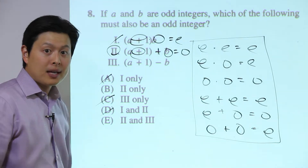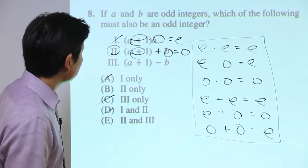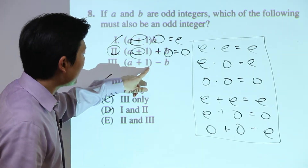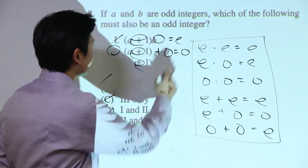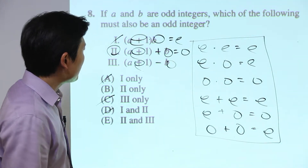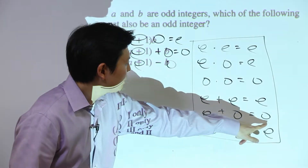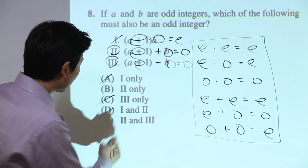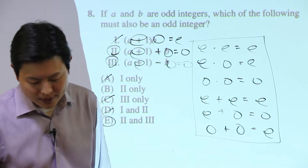Now we're between B and E, so let's check Roman numeral III: (a + 1) − b. A plus 1 is odd plus odd, which is even. Then even minus b — b is odd — and even minus odd works the same as even plus odd, which gives odd. Roman numeral III also works, so the answer is E.